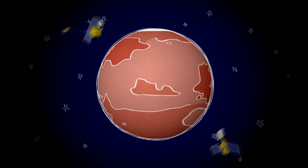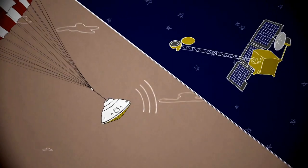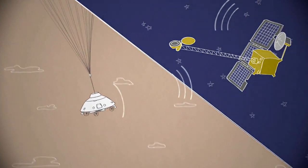But NASA has two spacecraft orbiting Mars that can help. For the second half of Curiosity's descent, the Mars Odyssey orbiter is in a good place to pick up the rover's signal and send it right back to Earth.